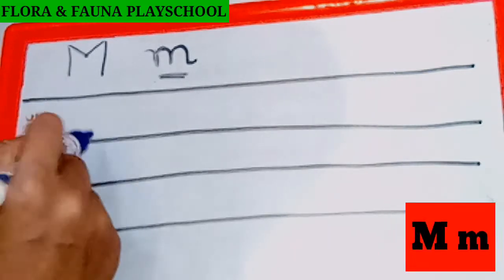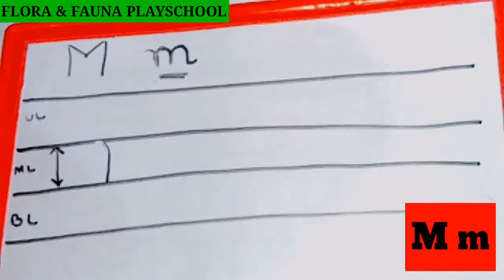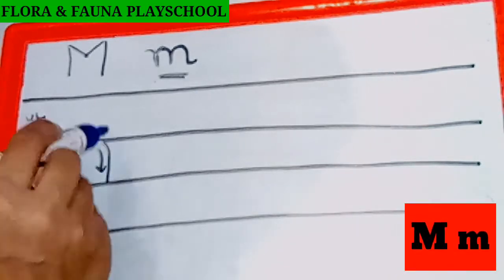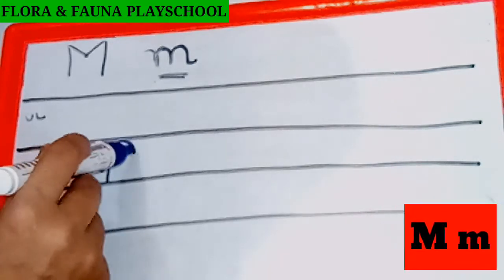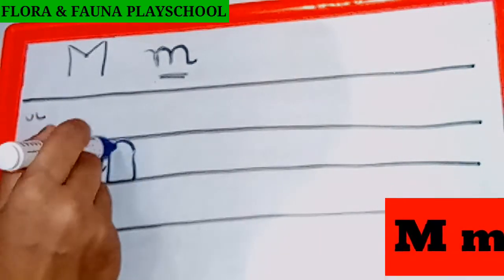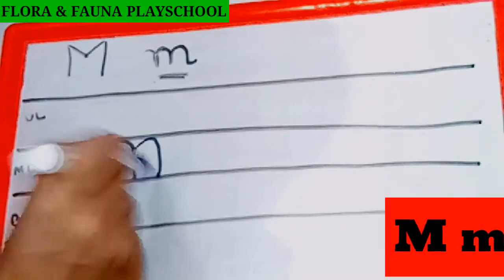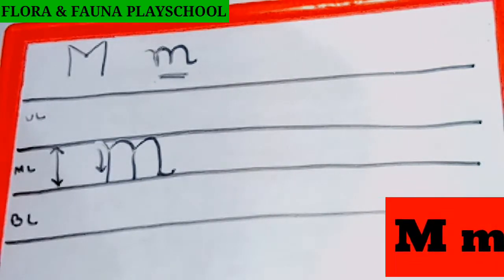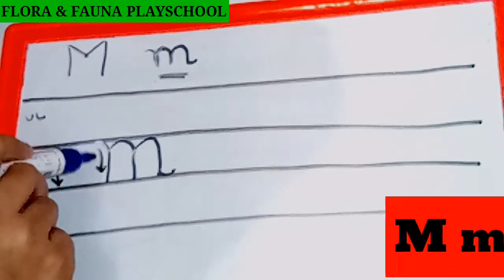So what you will do: first, draw a standing line touching the bottom. Then draw a small curve and touch it to the bottom. Then again draw a small curve and it should touch the bottom, and make a small curve — a tail kind. So this is M.